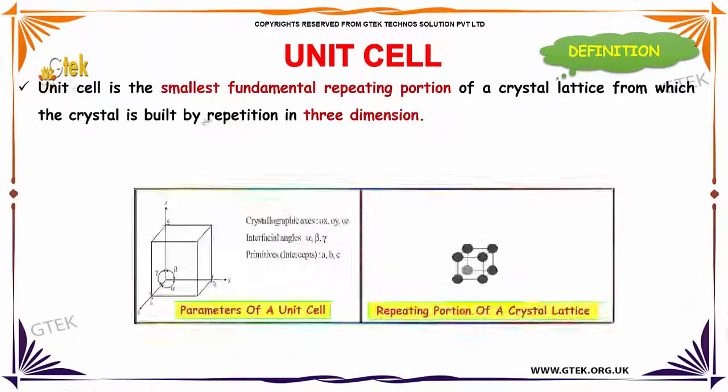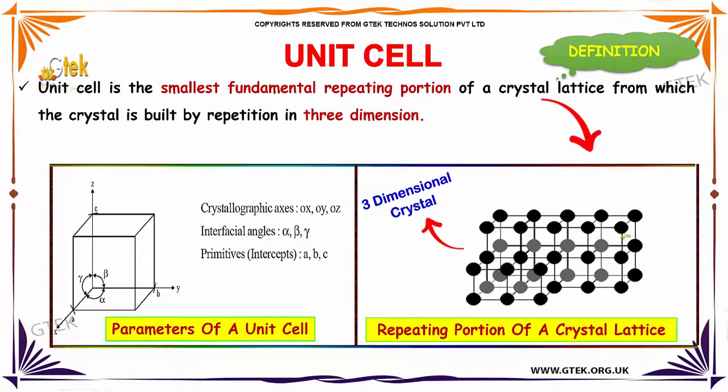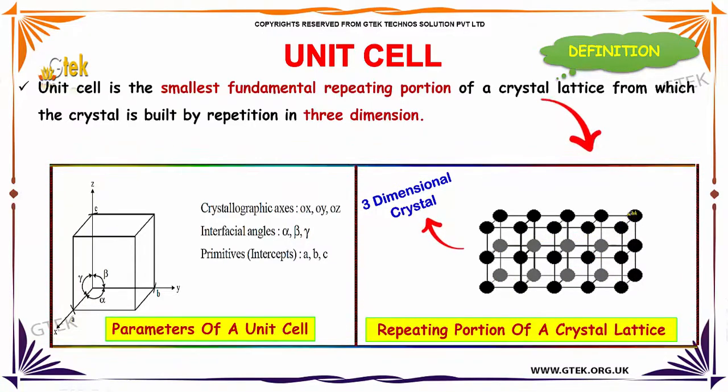A unit cell is the smallest fundamental repeating portion of a crystal lattice from which the crystal is built by repetition in a three-dimensional structure. You are able to see the repeating portion of your crystal lattice: one, two, three, four, five, six, seven, eight. It will go on.